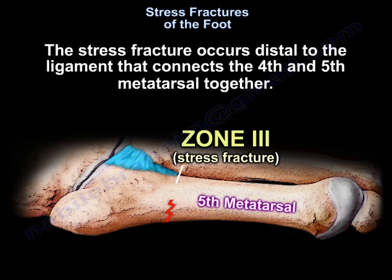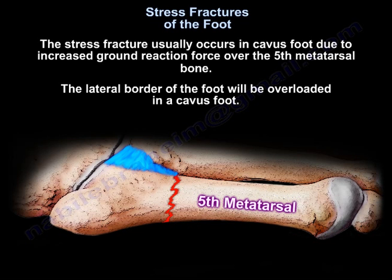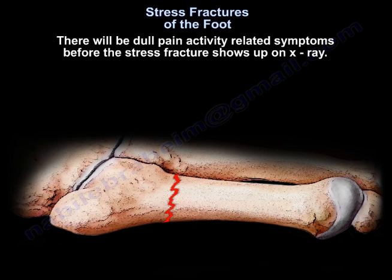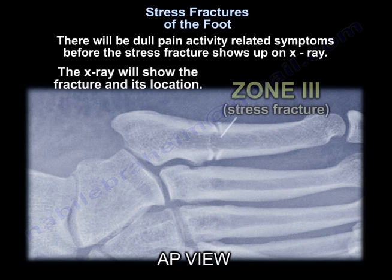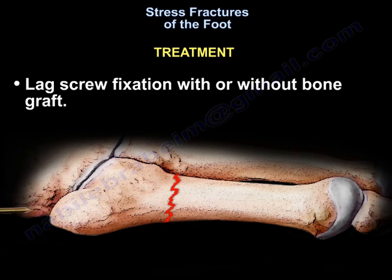The stress fracture occurs distal to the ligament connecting the fourth and fifth metatarsals. It usually occurs in cavus foot due to increased ground reaction force over the fifth metatarsal bone, overloading the lateral border of the foot. There will be dull, activity-related pain before the fracture shows on x-ray. The x-ray will show the fracture location and varying degrees of sclerosis and widening of the fracture line. Treatment: lag screw fixation with or without bone graft.